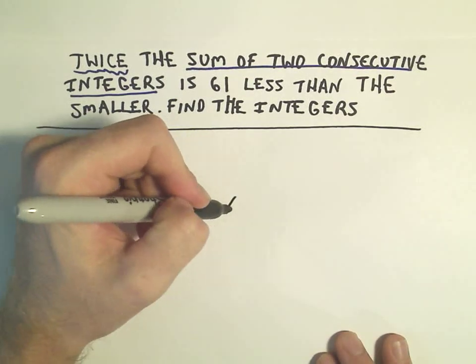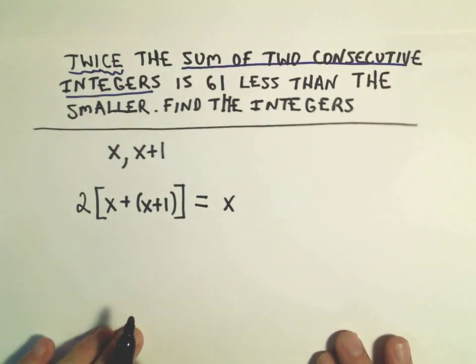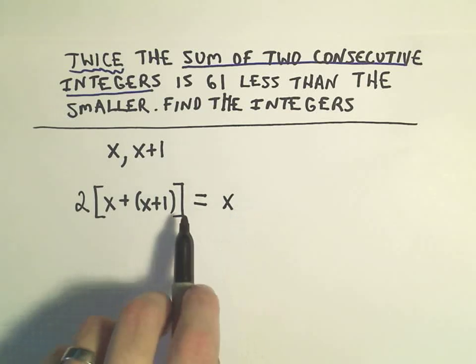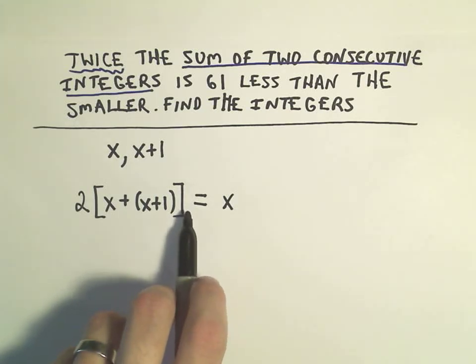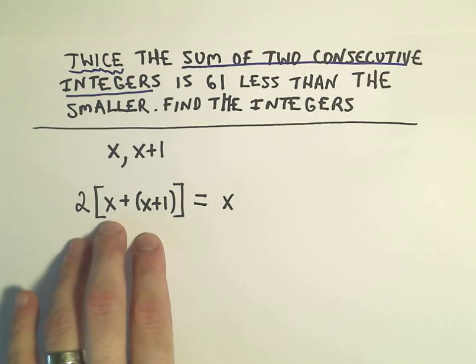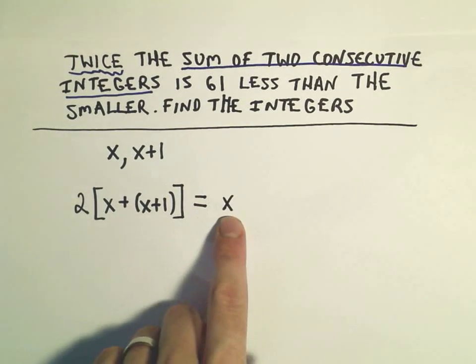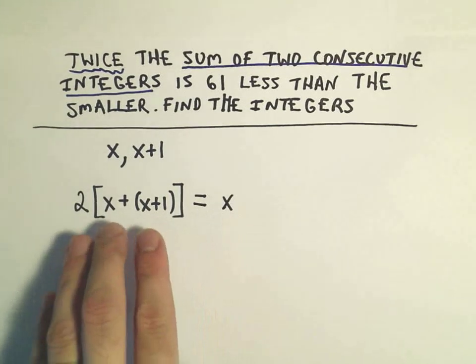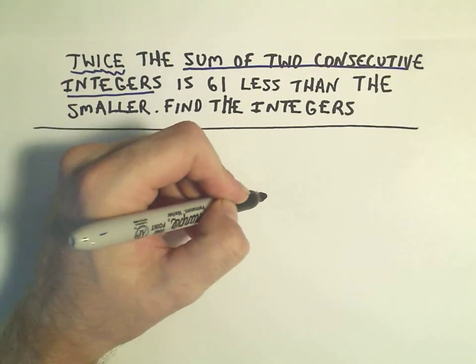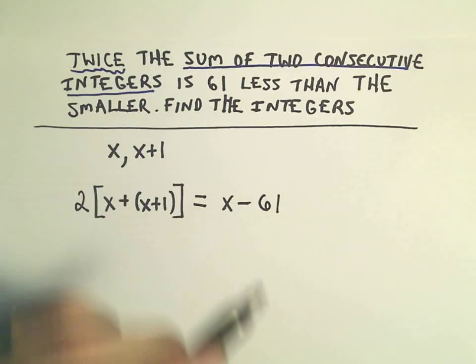Well the smaller number is x. At this point I usually stop. I know on the right side I either have to make it minus 61 or plus 61. On the right side it says you have twice the sum. Right now it says it's equal to the smaller one. But actually this left side is smaller than that. To make everything balance out, we would also have to subtract this 61 from the right side. And now everything would be equal.